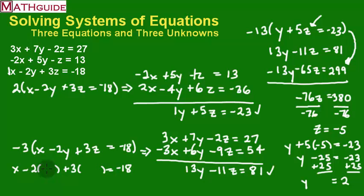It says X - 2 times Y + 3Z is equal to negative 18. So in place of Y, I put 2. In place of Z, I put negative 5. And I'll do some calculations. I've got an equation with only X in it. So I'll be able to solve this. So it's X - 4 - 15 = -18.